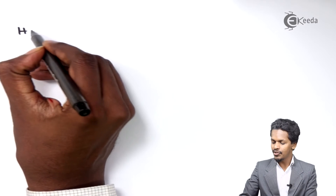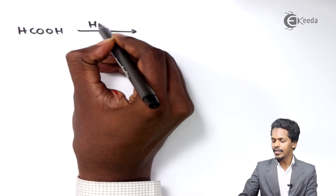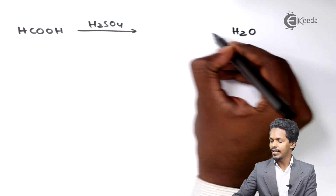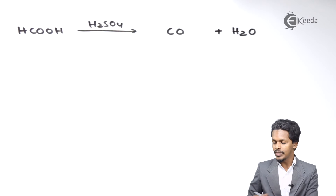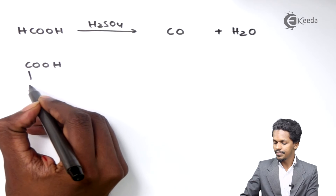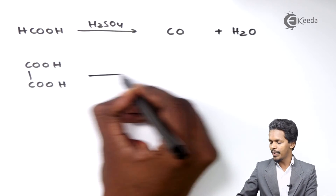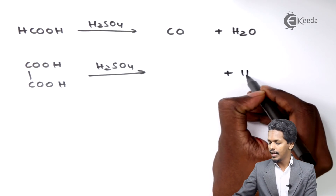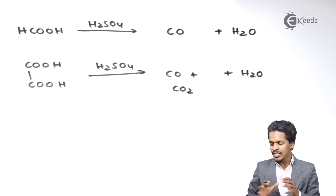Now considering formic acid — HCOOH — when treated with H2SO4, water (H2O) is removed and carbon monoxide (CO) is left. For oxalic acid (COOH)2, when treated with H2SO4, water is removed as a byproduct and we get carbon monoxide and carbon dioxide.